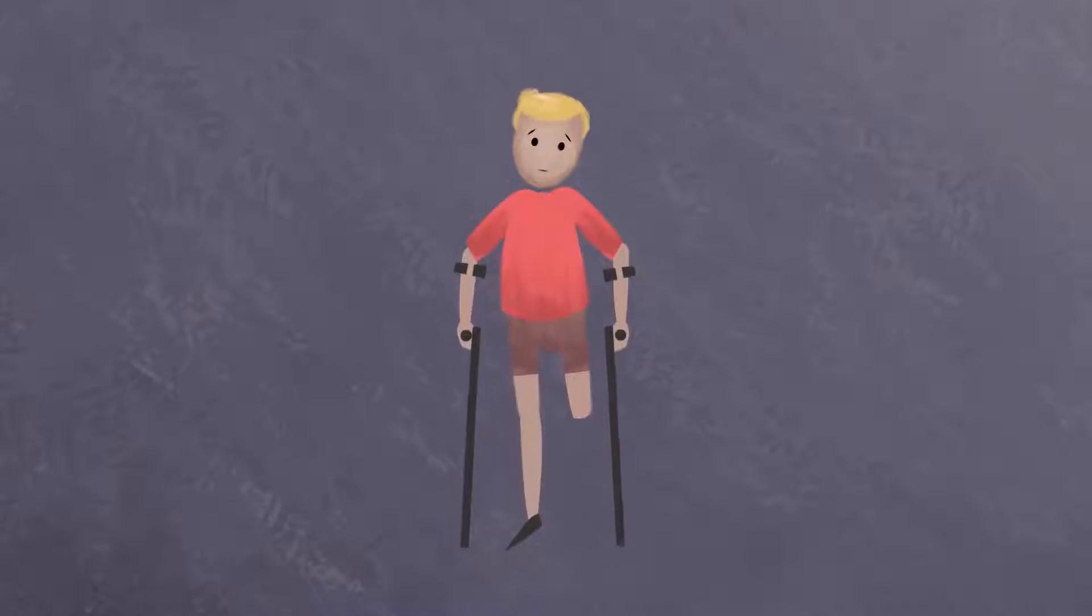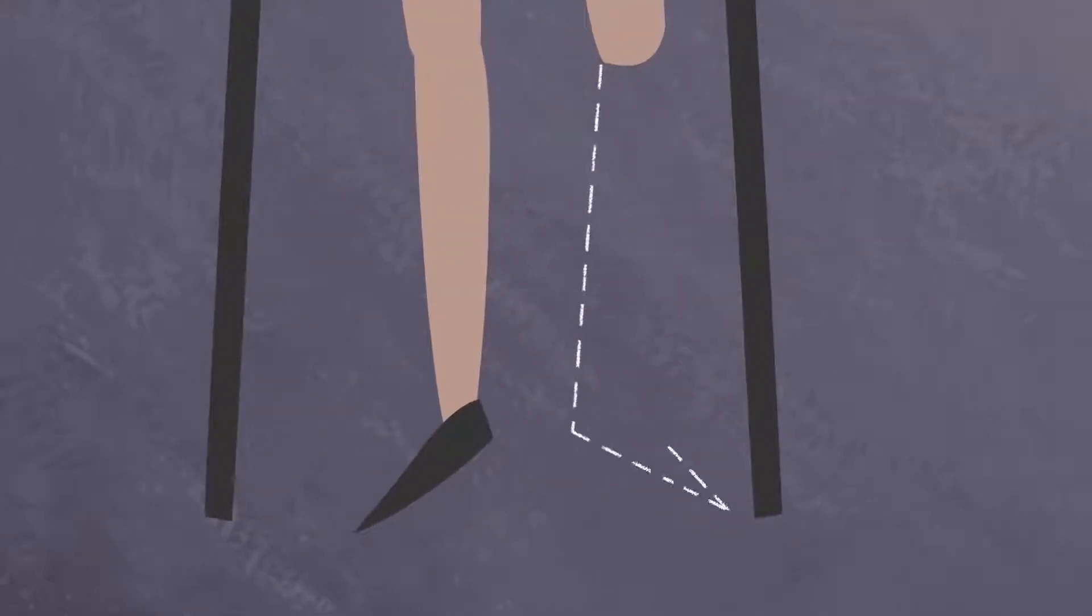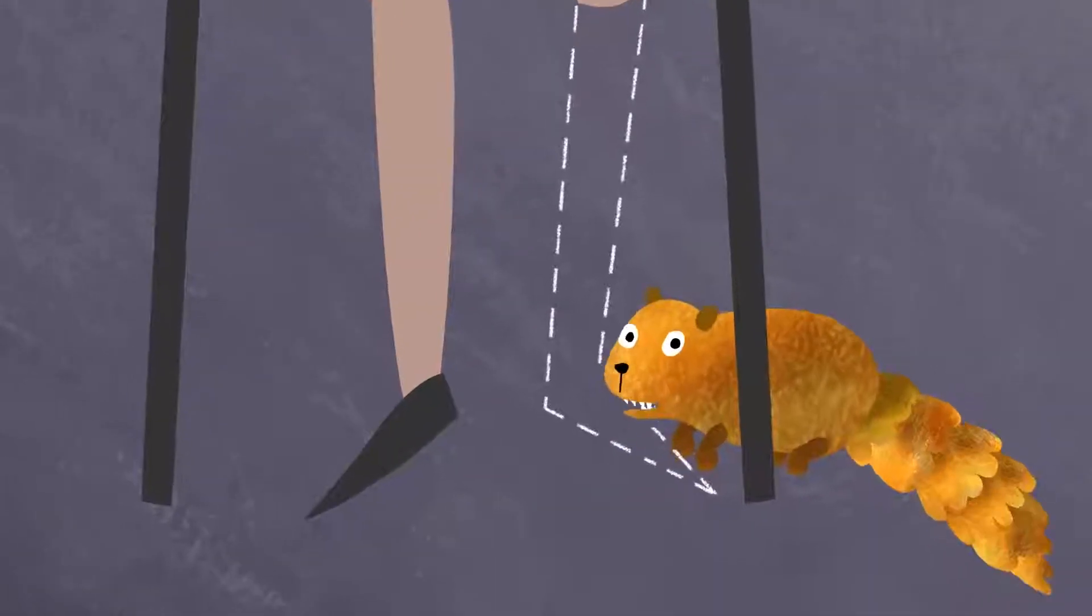Sometimes pain is not helpful. Like phantom limb pain. You don't expect a missing limb to ache, but it does. And the pain is very real. So how do we explain this?